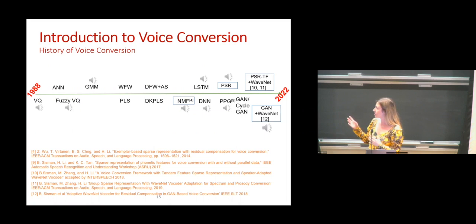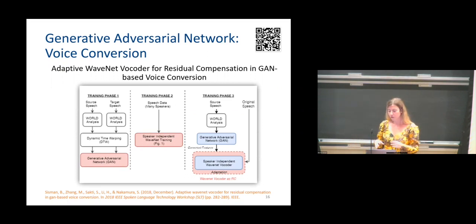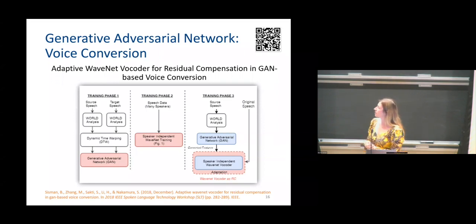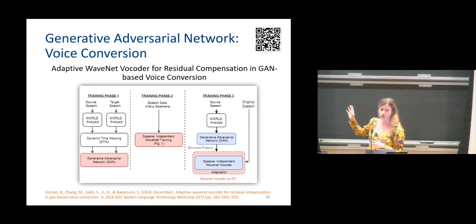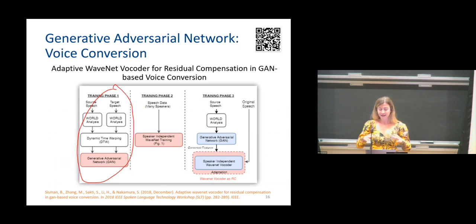I would like to focus on one paper in particular — it is very simple and straightforward for those not working in voice conversion. This paper was published at SLT a couple of years ago, and you can access it via the QR code shown here. This is the Adaptive WaveNet Vocoder for GAN-based Voice Conversion. I picked this paper because I want to go through the training part of voice conversion. As you can see, there are three phases here. Training phase one is finding a mapping between source and target speakers.